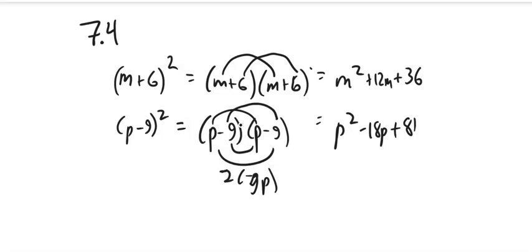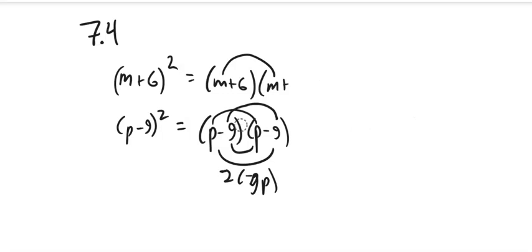So this gives me one relationship, which is if I have something that's a²+2ab+b², like m² is the a², 6² is the b², 2 of the m times 6 in the middle, that is (a+b)².